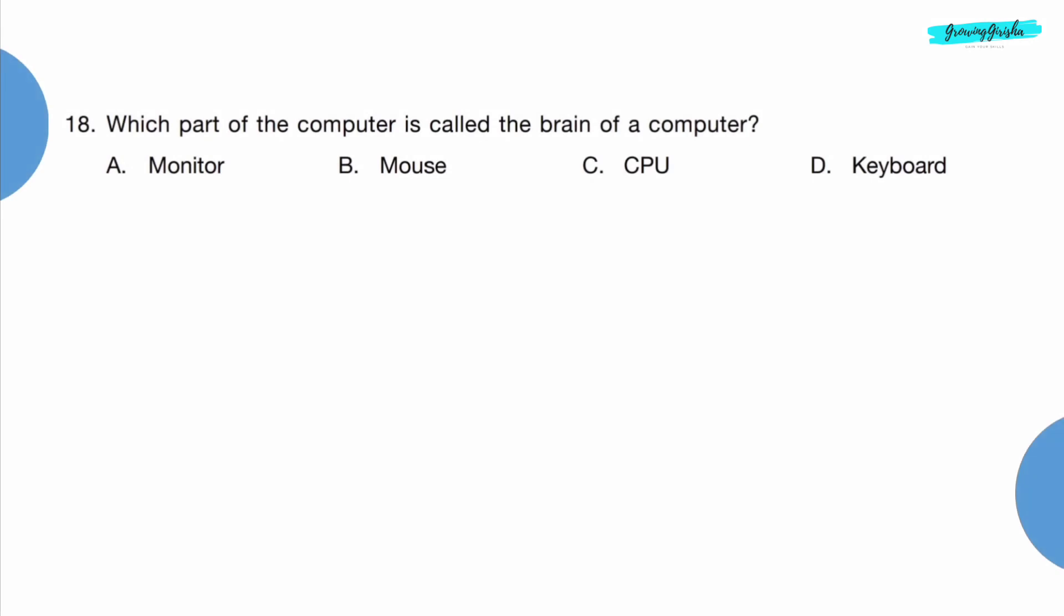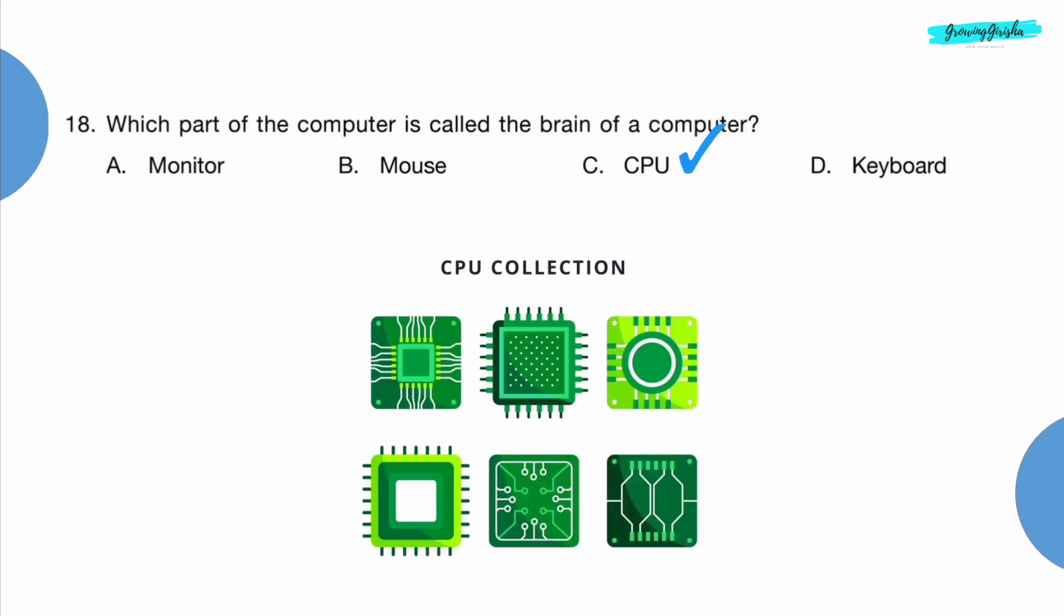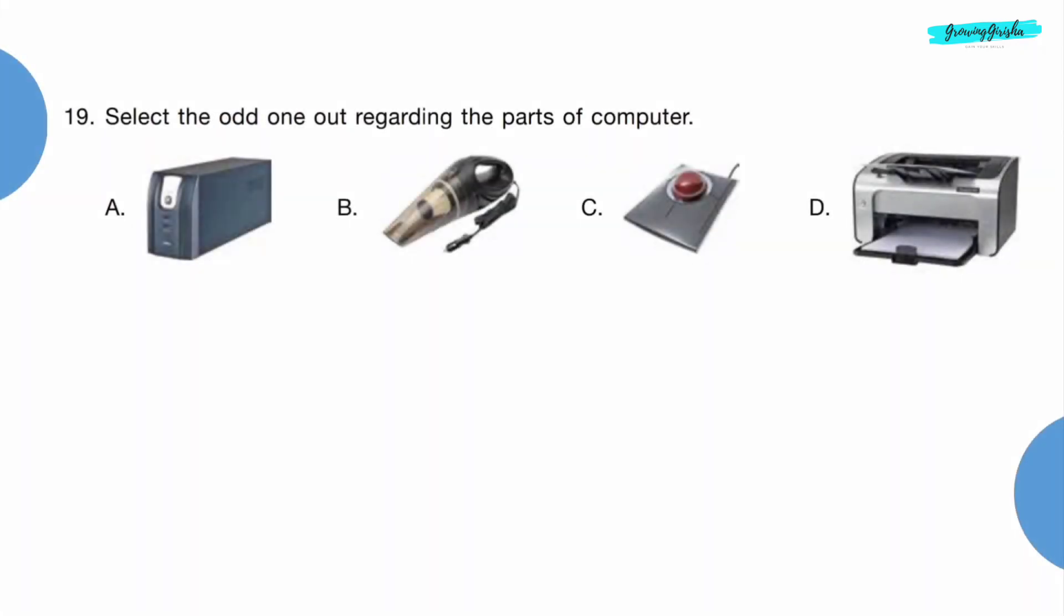Question 18: Which part of the computer is called the brain of a computer? Option C, CPU, Central Processing Unit. Question 19: Select the odd one out regarding the parts of computer. Option B is a vacuum cleaner and it is not a part of computer.